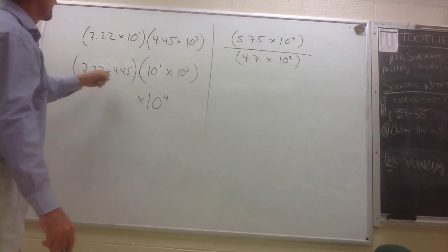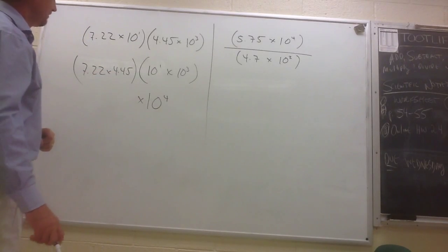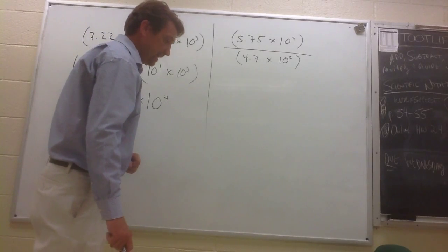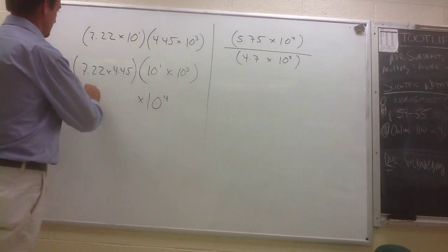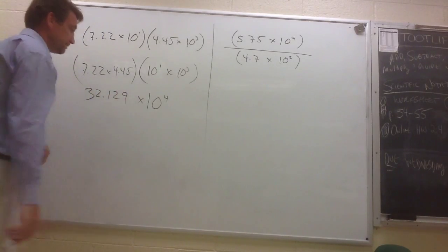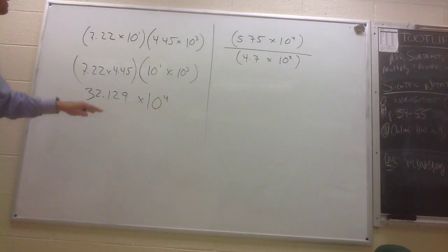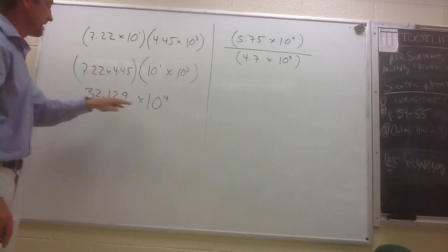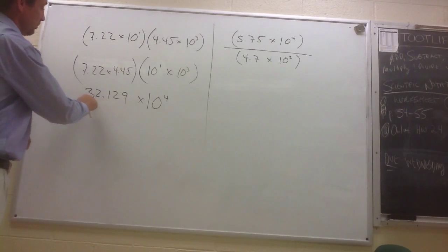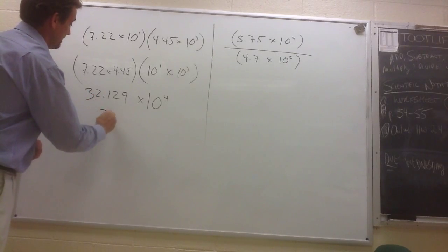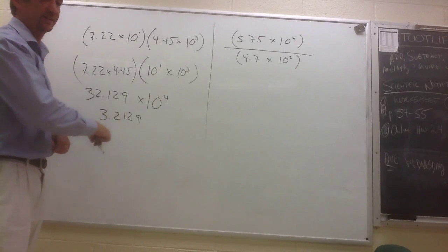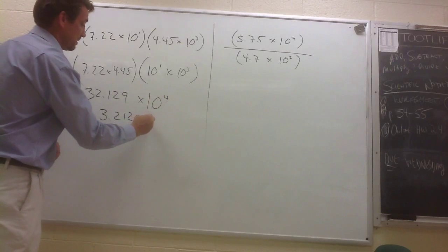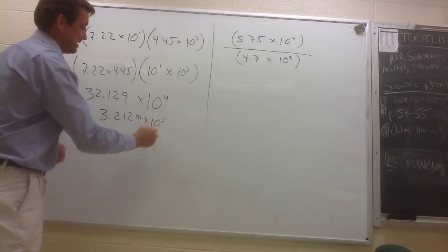So now, let's multiply 7.22 and 4.45. And I think we would get something like 32.129 times 10 to the 4th. Now, because this number here is greater than 10, we know that this is not scientific notation. So we're going to move our decimal one place to the left and make that 3.2129. And remember our mnemonic, when we move the decimal left, the exponent increases. So we're going to take that times 10 to the 5th power.